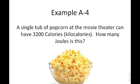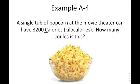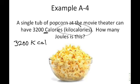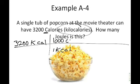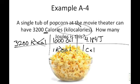Example A4: A single tub of popcorn at the movie theater can have 3,200 Calories — note this is a capital-C Calorie, which actually means kilocalorie. How many joules of energy is this? Using dimensional analysis: 3,200 kilocalories × 1,000 calories per kilocalorie × 4.184 joules per calorie. The kilocalorie and calorie units cancel, leaving joules. The answer is approximately 1.34 × 10⁷ joules.